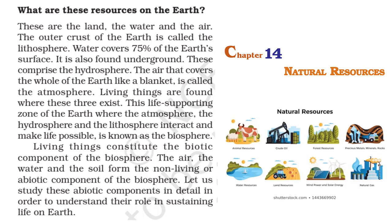Natural resources are present in different layers of Earth. The first is the lithosphere — the outer crust of our planet — which we call land. Another is the hydrosphere. Our Earth is covered with 75% of water, which is found in seas, oceans, rivers, lakes, streams, ponds, and underground waters. That is why our Earth is also known as the blue planet because of the presence of plenty of water.